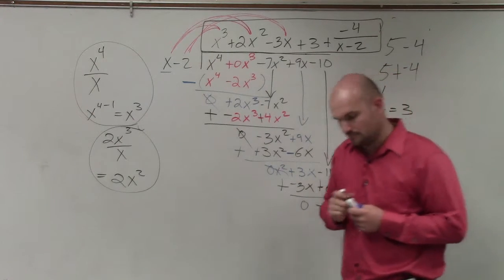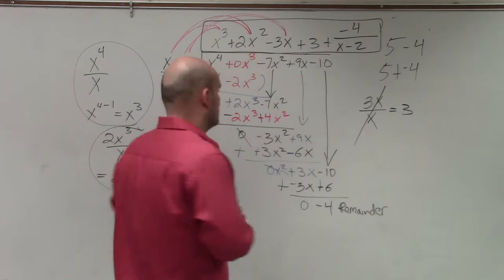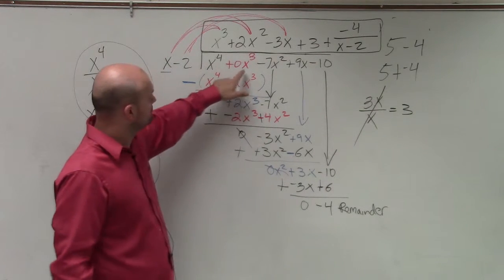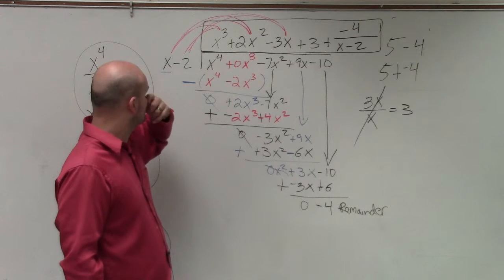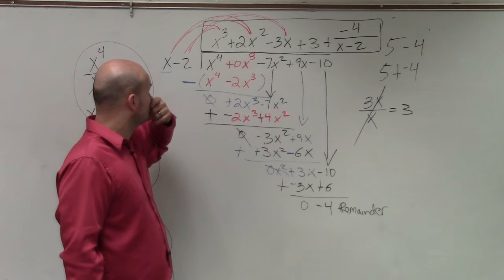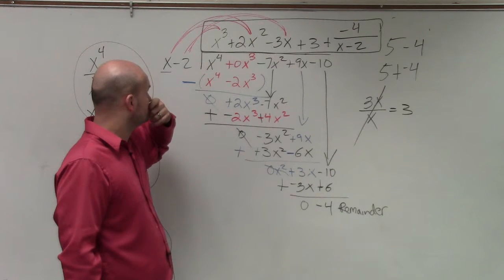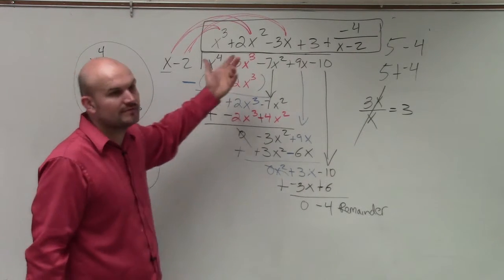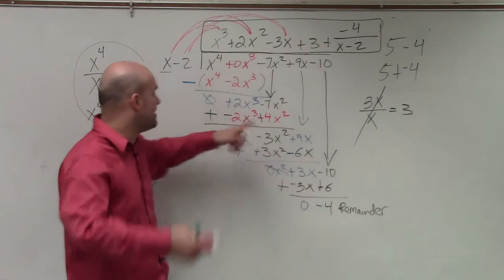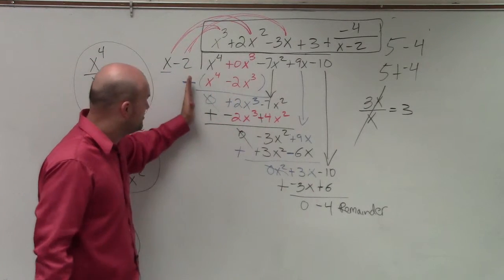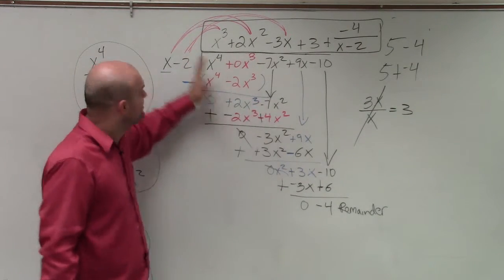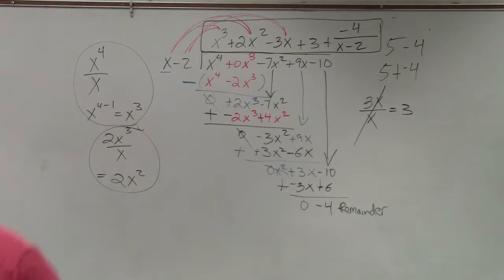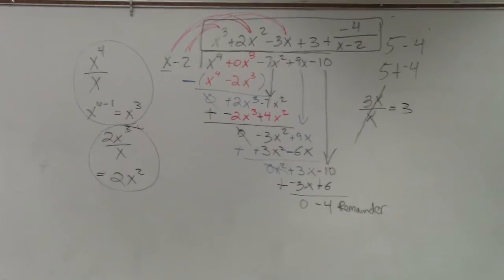A student asks: when you have 0x cubed and then subtract 2x cubed, how does it become positive 2x cubed? Because you're subtracting a negative — minus a negative. Or using the add-and-negate method, you change it to plus positive 2, which still gives you 2. That's exactly why I prefer adding and negating rather than subtracting.